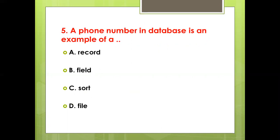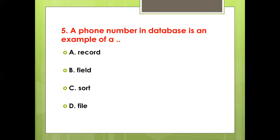Fifth bit: A phone number in a database is an example of a dash — Option A: Record. Option B: Field. Option C: Short. Option D: File. Answer: Option B, Field.